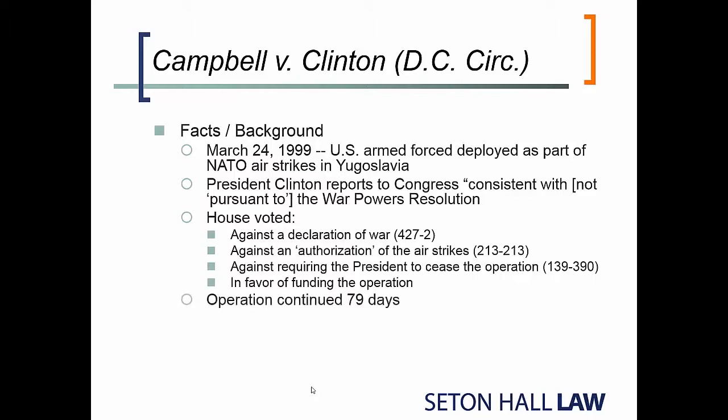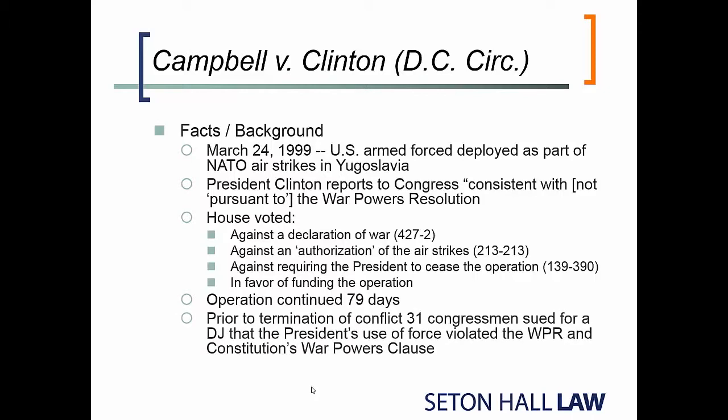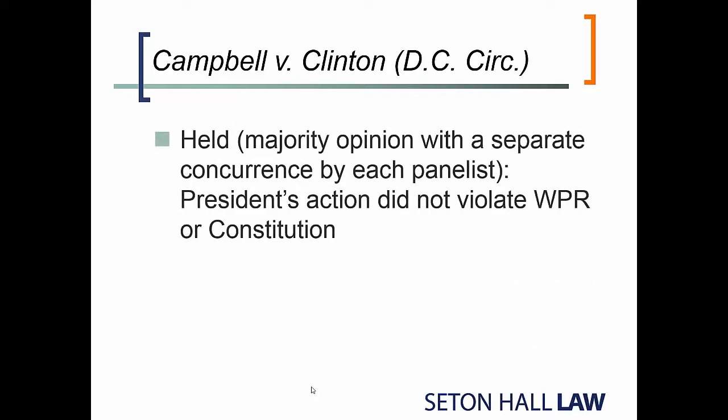The operation in Yugoslavia continues for 79 days, which of course goes beyond the 60-day period in the War Powers Resolution. Prior to the termination of the conflict, a group of 31 congressmen who opposed the action in Yugoslavia sued for a declaratory judgment — that the president's actions violate the War Powers Resolution and also violate the constitutional separation of powers.